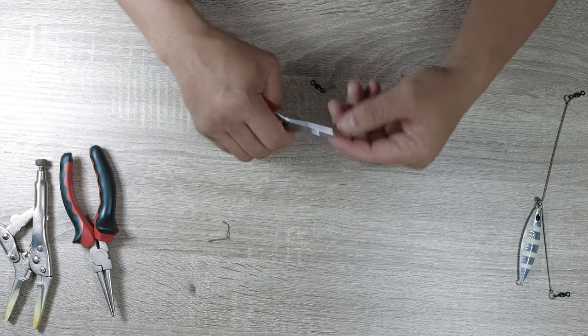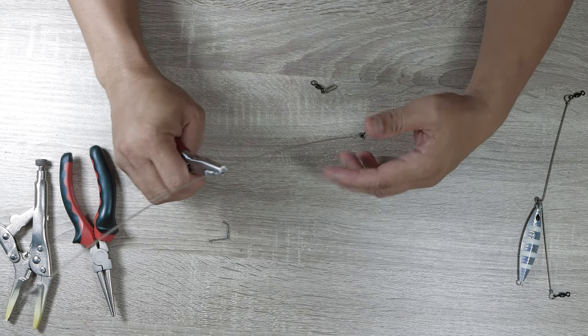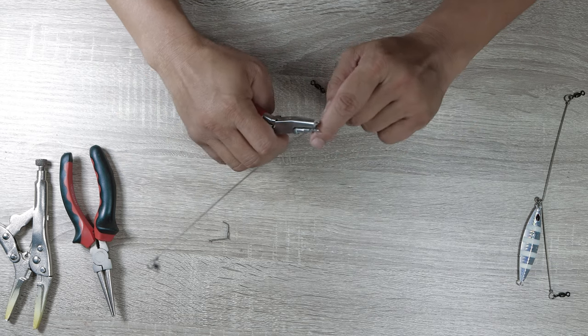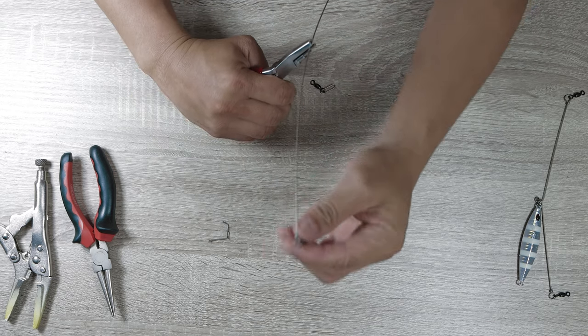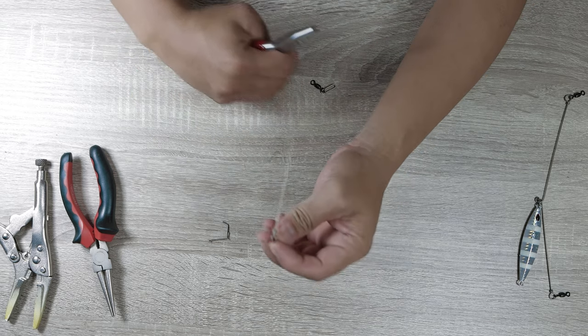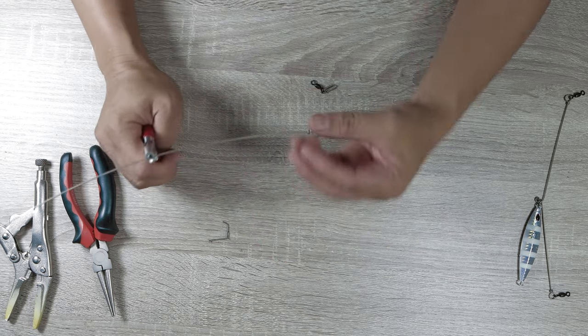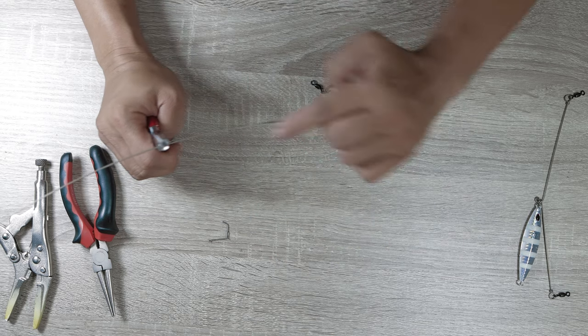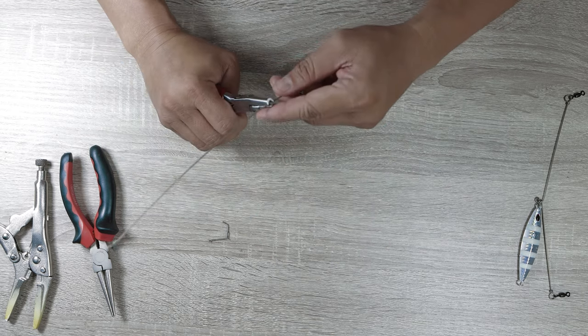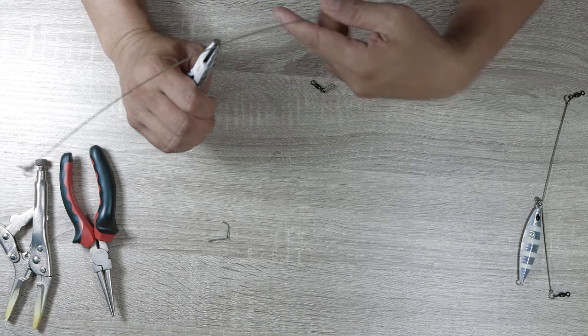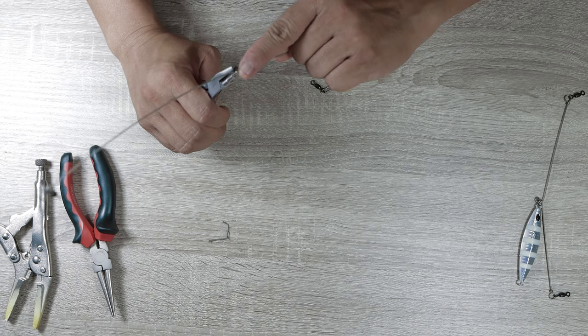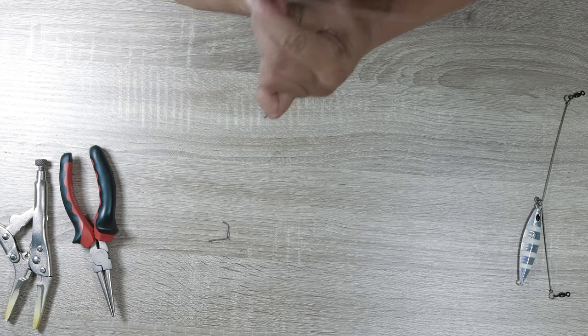Now what we need to do, what I do differently here is I actually make a smaller eye than these two. So this side here and this side here both have the same sized eye but on this one, in the middle, I always do a smaller eye.